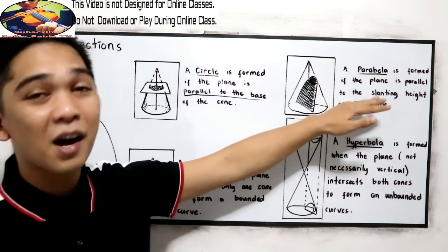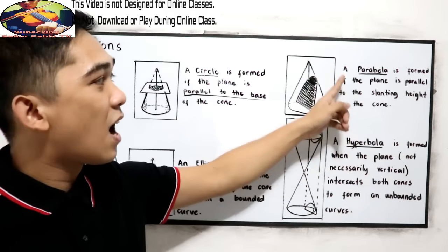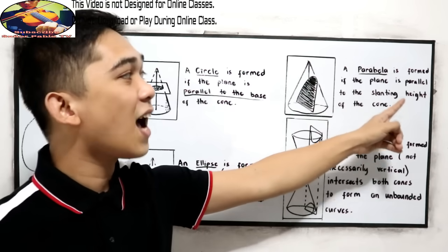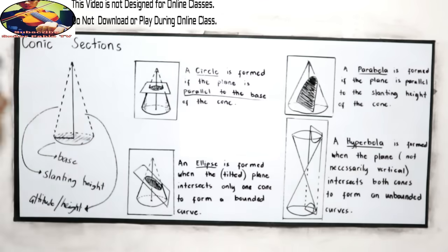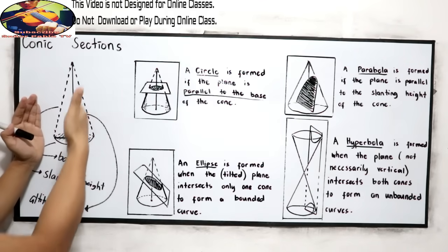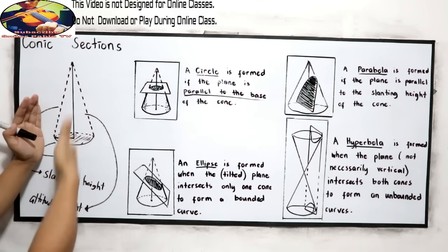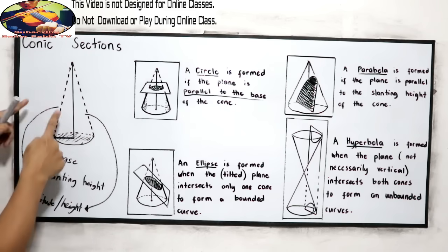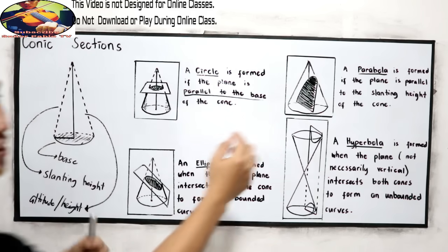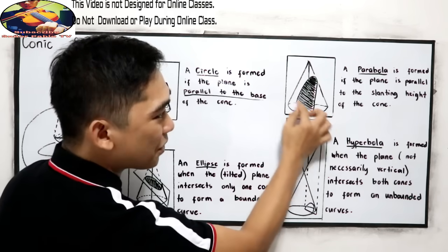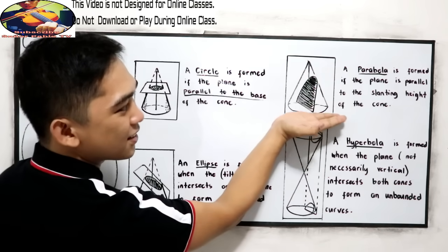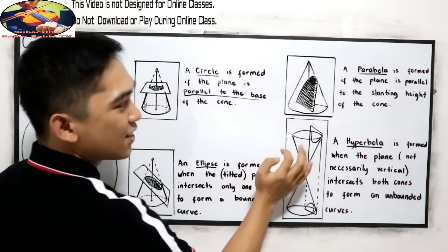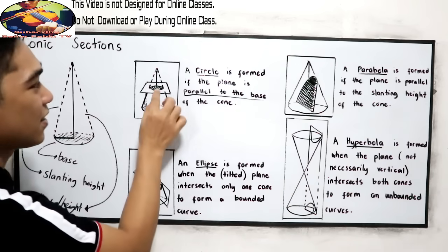Next, the parabola. In our cone, if we're going to cut a part of our cone that is parallel to the slanting height, that will form a parabola. So, this illustration. Parabola and circle.